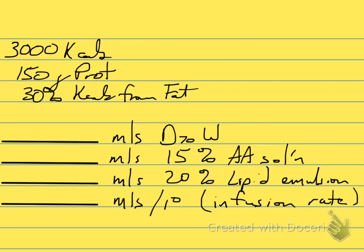Because this is a fairly stout, caloric, and high protein prescription, we're going to need to use some fairly high concentrated substrates. So we're going to use 70% dextrose — the D70W — a 15% amino acid solution, and a 20% lipid emulsion as well.